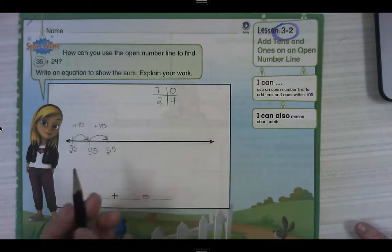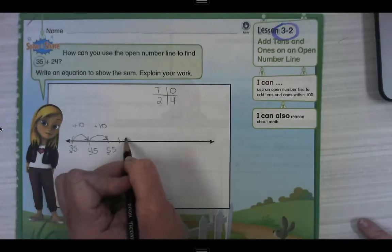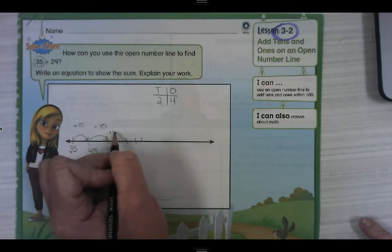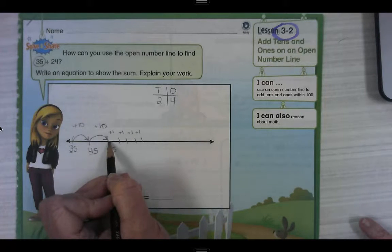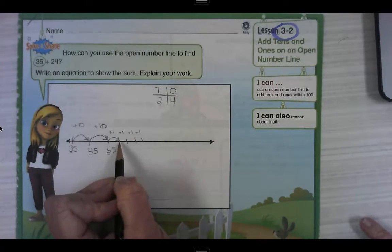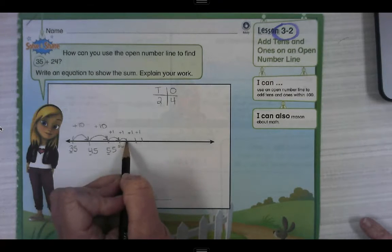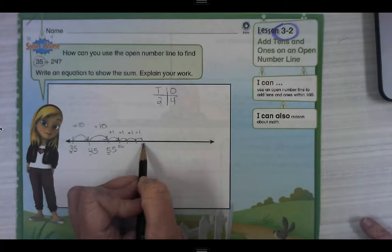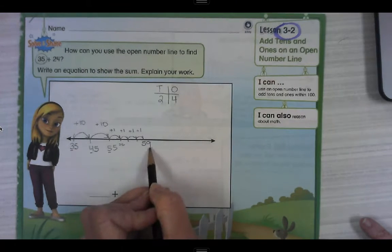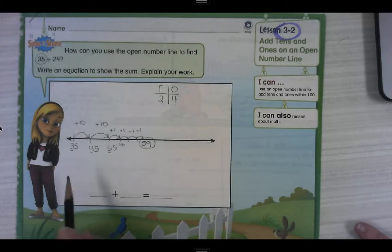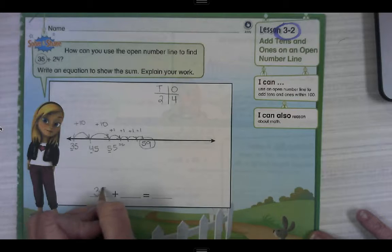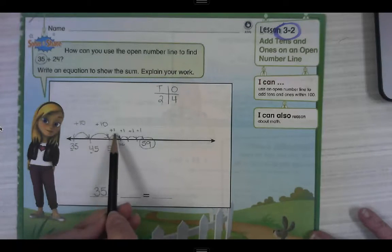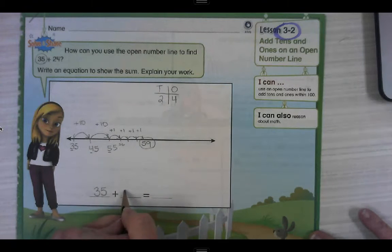Okay, now we need to add four ones. I'm going to add four tally marks. One, two, three, four. Each one of those is going to be plus one. So 55. One more is 56. 57, 58, 59. So our sum is 59.